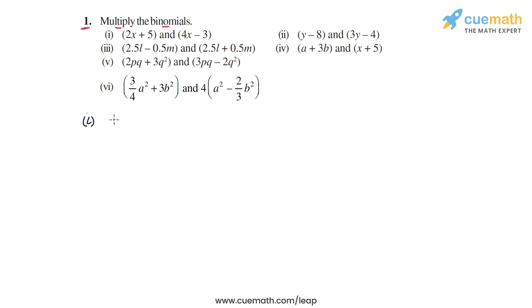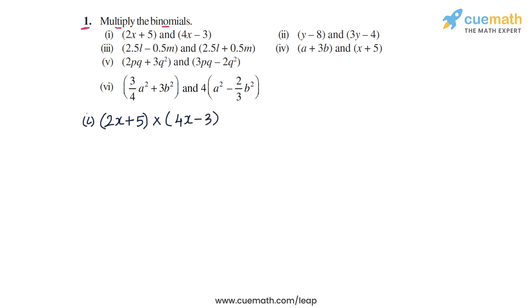In this part, we have to multiply 2x plus 5 — this is the first binomial — with 4x minus 3, which is the second binomial. So we will apply the distributive law and expand this product.